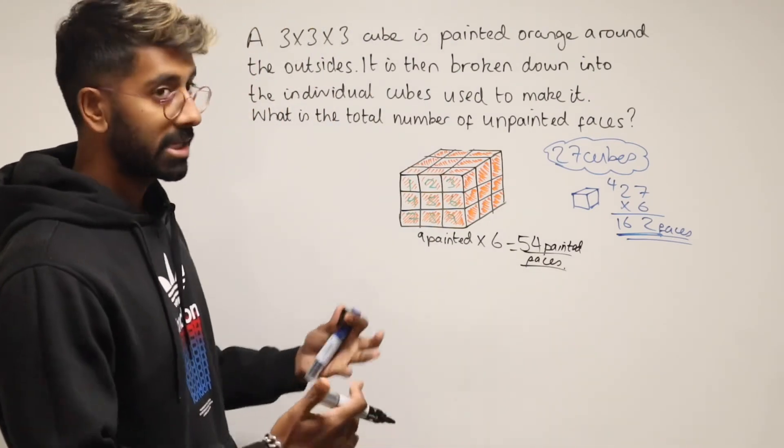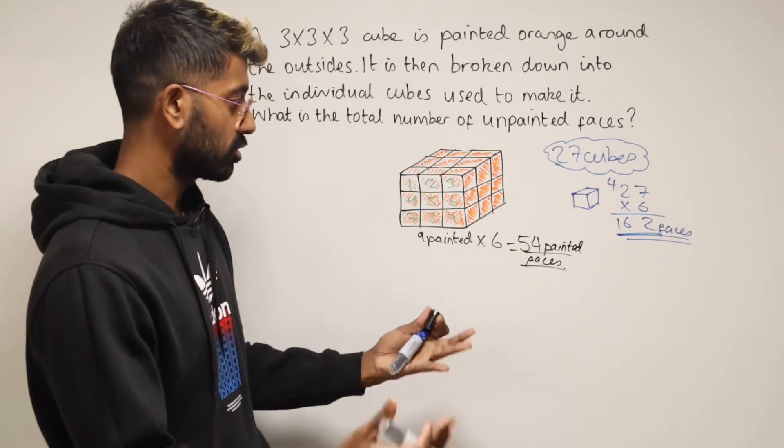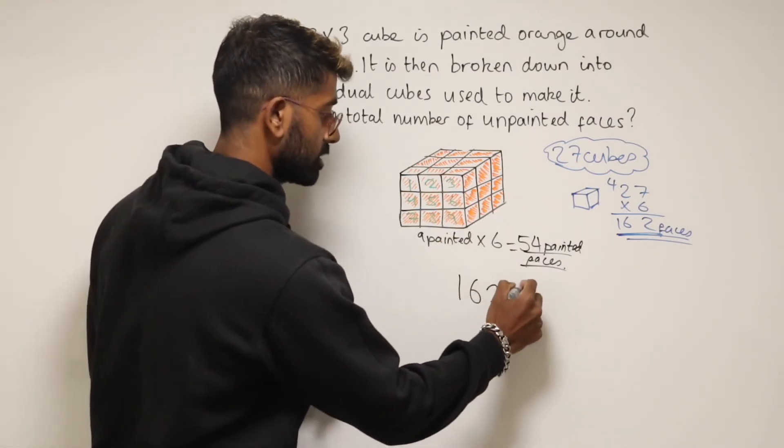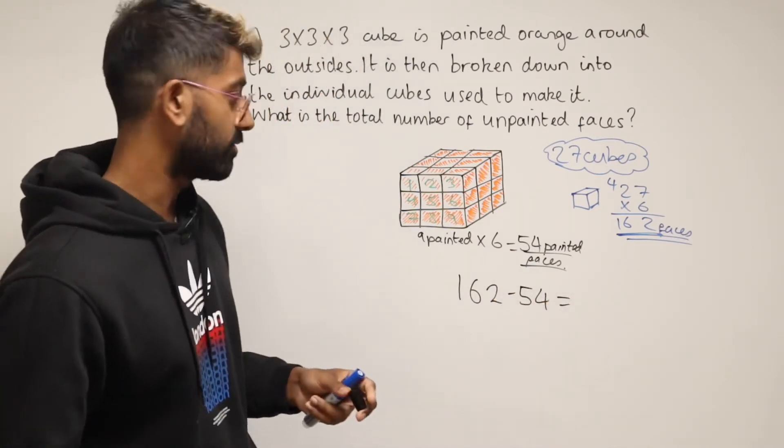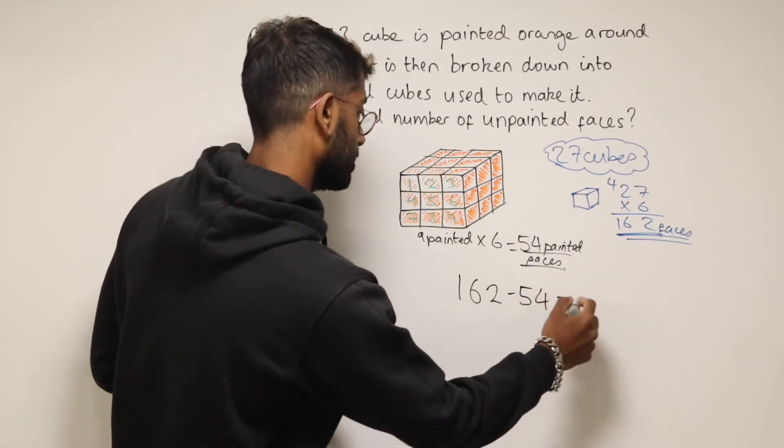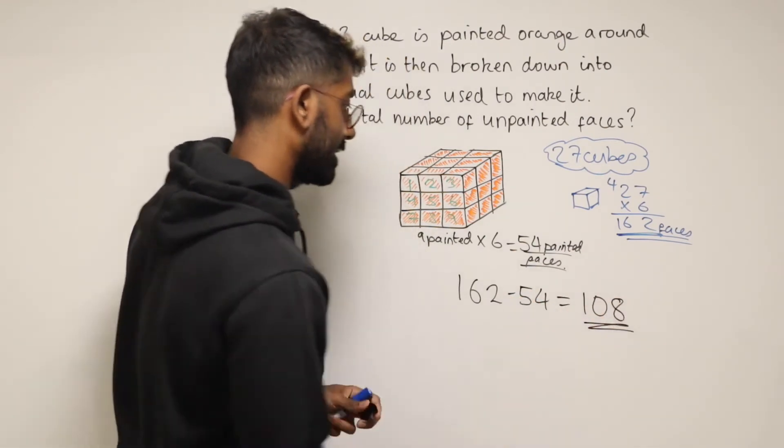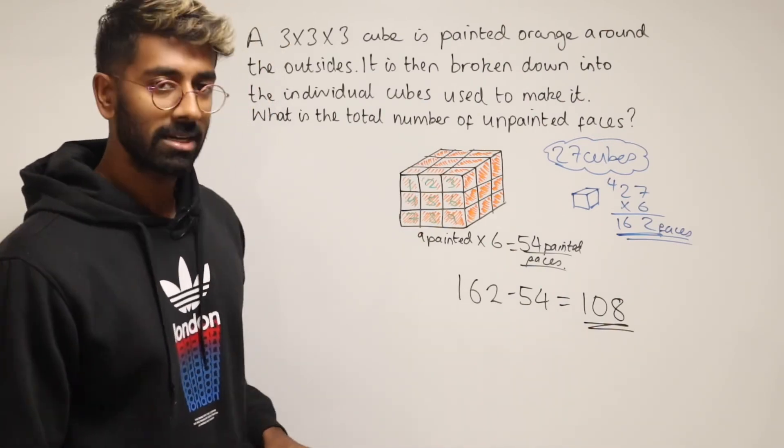And then to work out how many are unpainted, we know that there are 162 faces in total. 54 are painted. So to find out the unpainted, we can do 162 and take away 54. That's going to leave us with 108. So there we go. In total, 108 unpainted faces.